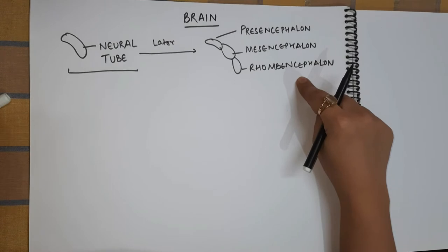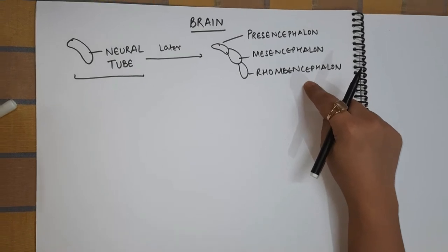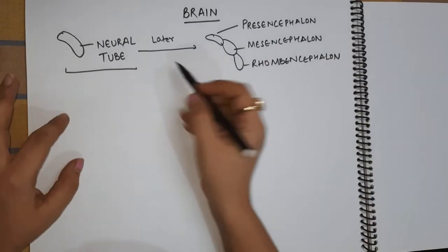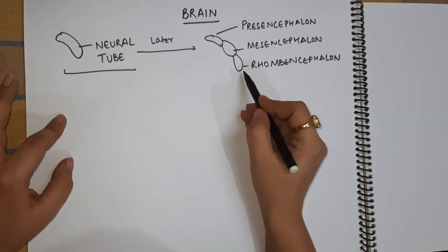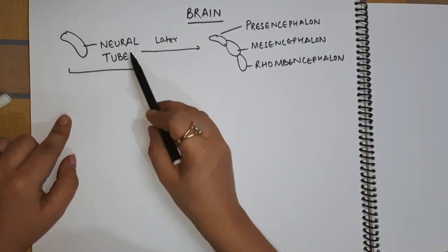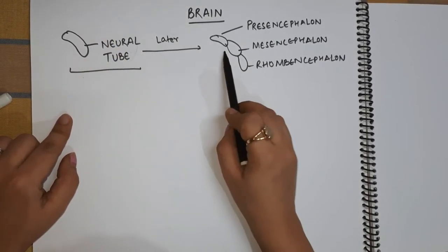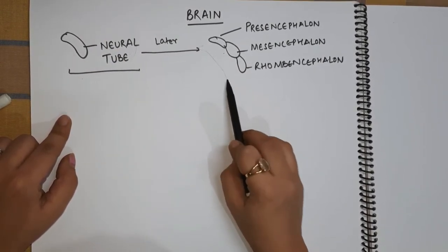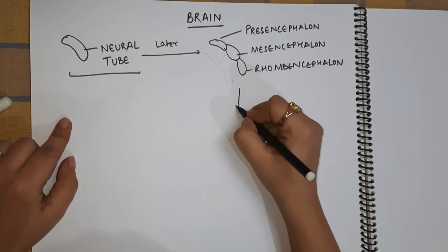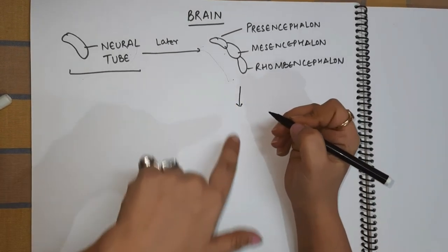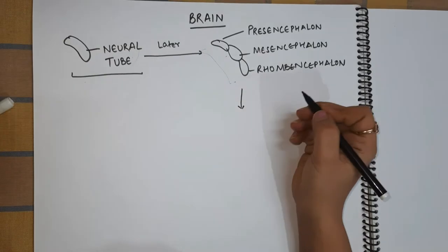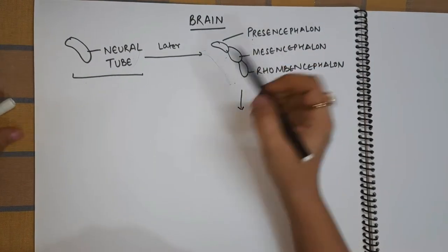In terms of HAP, pathology, or physiology, we call this process the differentiation process — because something which is a cellular mass grows into something which is very distinguished. And later on, this structure grows into what we call the forebrain, midbrain, and hindbrain.